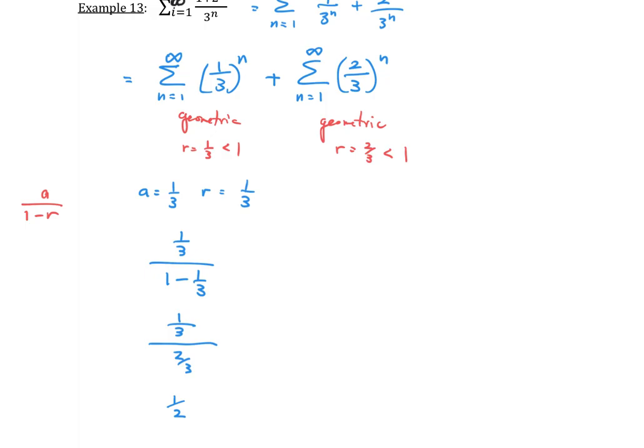Let's look at the second one. For the second one, the a is equal to 2 thirds and r is also equal to 2 thirds. So, when I apply the formula for the geometric series, I'm going to get 2 thirds divided by 1 minus 2 thirds. This gives us 2 thirds over 1 third. Again, dividing by a fraction is the same thing as multiplying by the reciprocal. So, that's going to give me a total of 2.